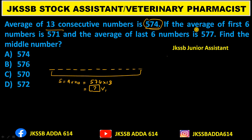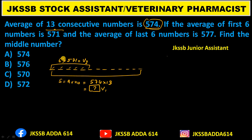The next part says: if the average of the first 6 numbers is 571, then the sum of the first 6 numbers = 6 × 571, which gives us value V2. Then, the average of the last 6 numbers is 577, so the sum of the last 6 = 6 × 577, giving us value V3.